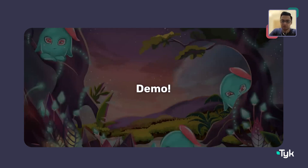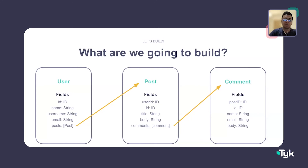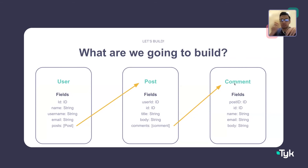Let's move on to the demo. Today we'll be looking at three different REST endpoints: one about user information, one about posts, and one about comments. Users will have social media posts, and those posts will have comments. We'll see how these three separate REST endpoints can be brought together easily using the Universal Data Graph, and then secured and made available for consumption.